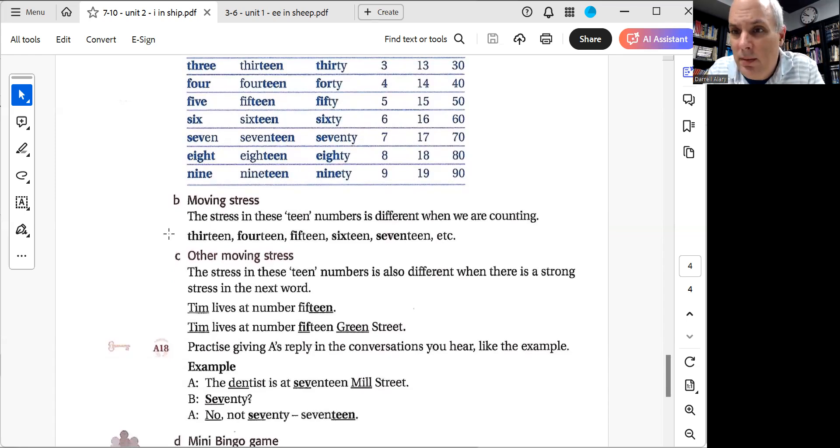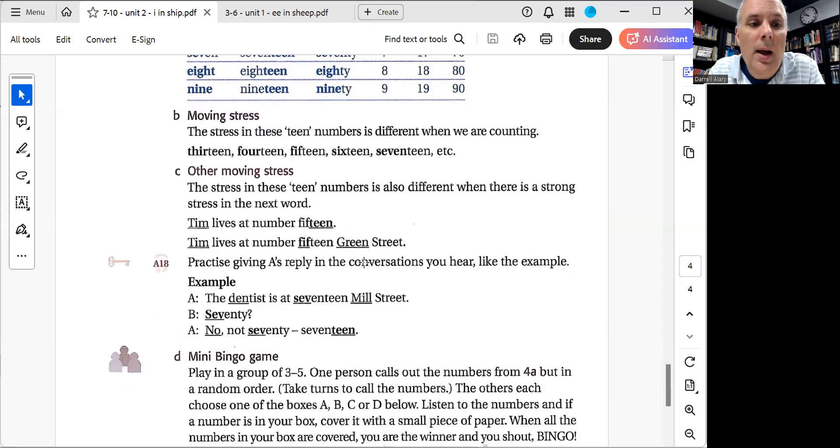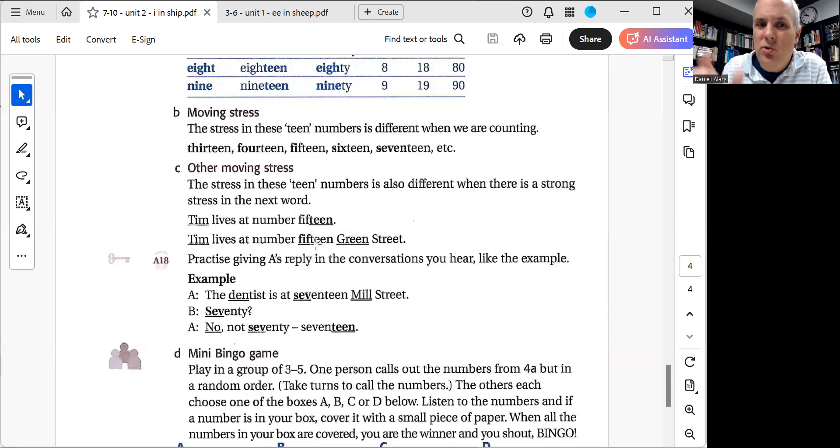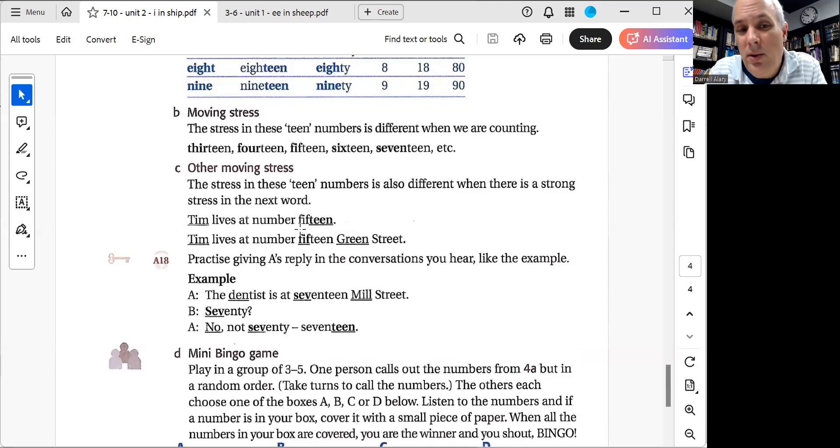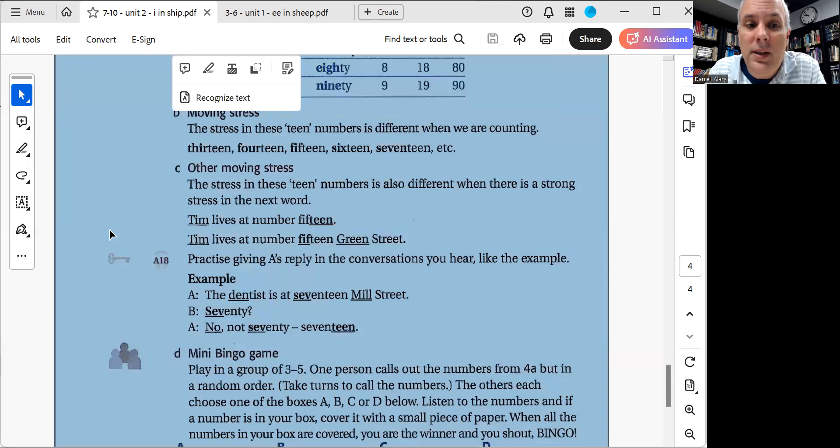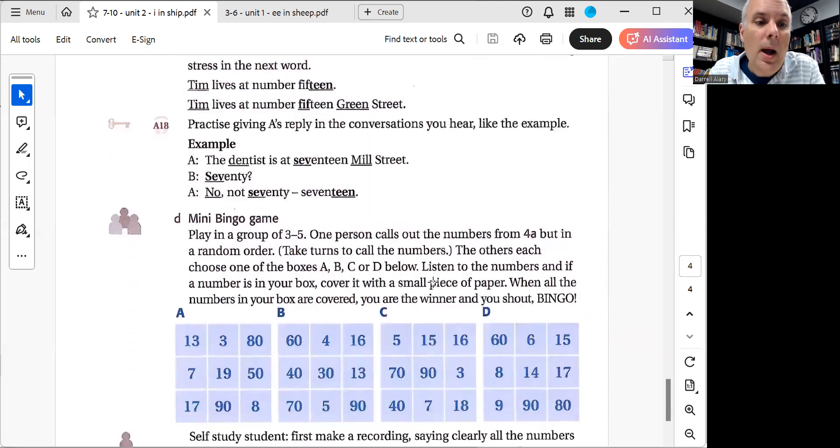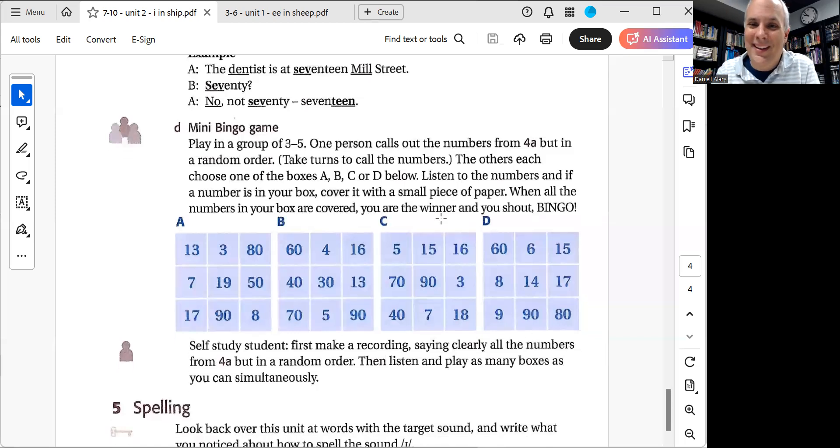And down here, just make sure that when you're counting, we usually just emphasize the first part because that's where a lot of the information is from. 13, 14, 15, 16, 17, like that. Here again, they're talking about the movement of the stress here. Tim lives at number 15. But when there's words after the word 15, then we often shift from the teen emphasis to the stress on the fifth part. Tim lives at number 15 Green Street. There's a bingo game here you can play if you have a friend at home, and just kind of practice saying these properly and stuff like that.